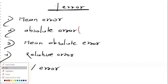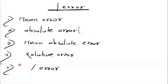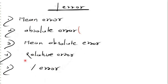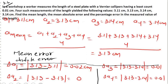The next question is based on percentage error. Whenever we calculate percentage error, first we calculate mean error — that means finding the mean of all measured values. After that we calculate the absolute error, then mean absolute error, then relative error, then percentage error. This whole part is solved in 5 processes, even if only 3 values are given.